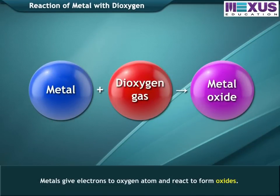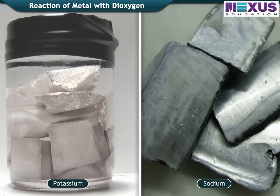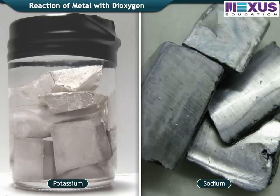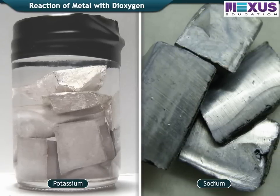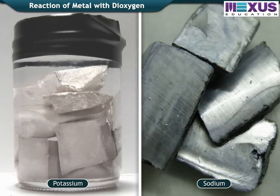Metals give electrons to oxygen atoms and react to form oxides. The reaction of different metals with oxygen varies widely. Metals like sodium and potassium burn if kept open in air, so they are kept in kerosene.